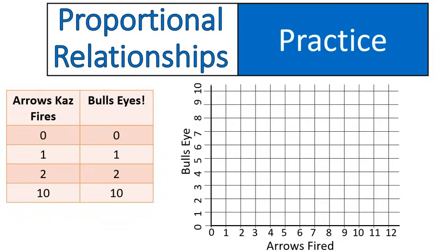Welcome back. I'm going to graph these points now and talk about why it is or is not a proportional relationship. First off, if Kaz fires 0 arrows, he gets 0 bullseyes. Makes sense. If he fires 1 arrow, he gets 1 bullseye. He's pretty good. 2 arrows, he gets 2 bullseyes. 10 arrows, he gets 10 bullseyes. Wow, Kaz is a very good archer.